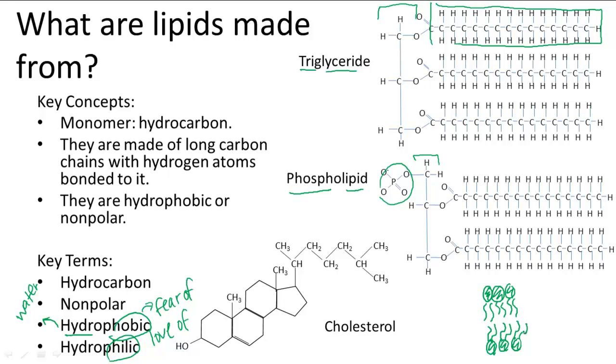Lastly, cholesterol is a unique lipid, not made of chains, but made of rings of hydrocarbons. There are three hexagon rings, and one pentagon ring, with a little doohickey off the pentagon.